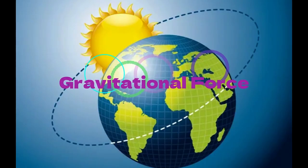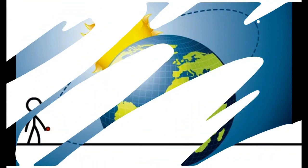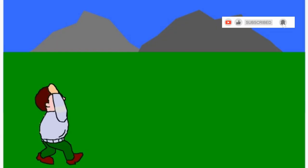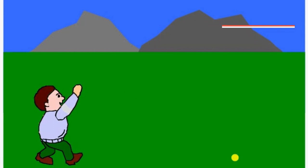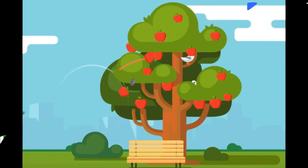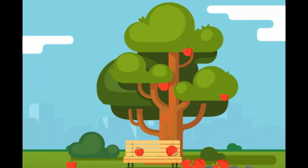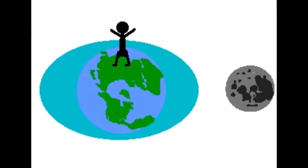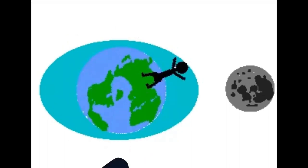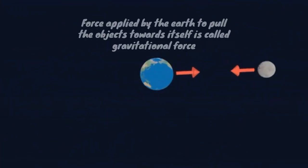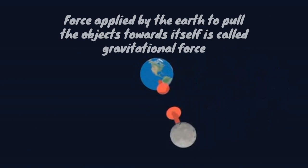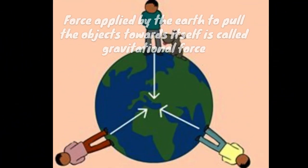Gravitational force. If an object is thrown upward by applying force, it reaches a certain height and comes down again. Why is this so? Why do fruits on trees fall to the ground? The earth pulls all the objects towards itself. The force applied by the earth to pull objects towards itself is called gravitational force.